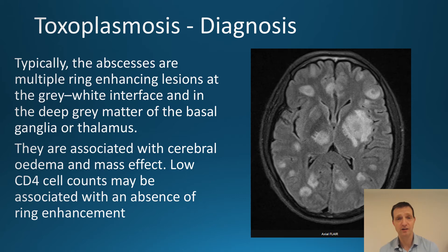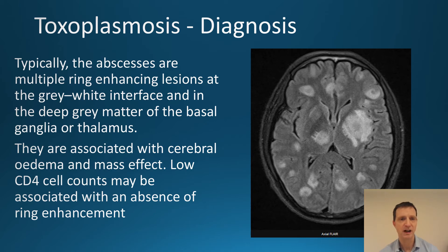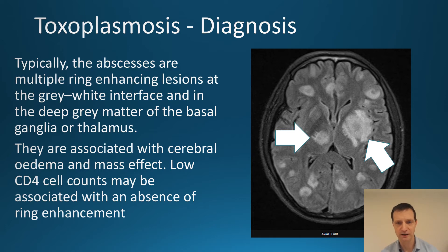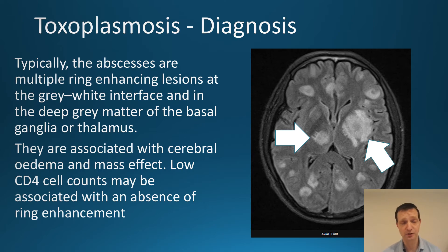Typically the abscesses appear as multiple ring-enhancing lesions. In the image on the right you'll see white blobs with a slightly darker centre giving a ring appearance. These are usually in the basal ganglia or the thalamus — the larger ring lesion is in the basal ganglia and the smaller one is in the thalamus. They are usually associated with surrounding oedema and mass effect. At very low CD4 counts, ring enhancement may be absent.